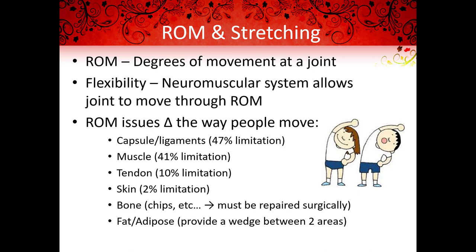Each specific joint has a normal range of motion that is expressed in degrees. The status of the soft tissue, including muscles, tendons, ligaments, capsule, skin, subcutaneous tissues, nerves, and blood vessels, all affect the range of motion of a joint. Within the field of physical therapy or athletic training, goniometry is commonly used to measure the total amount of available range of motion at a specific joint. The range of motion of a joint may be limited by the shape of the articulating surfaces and by the capsular and ligamentous structures surrounding a joint.